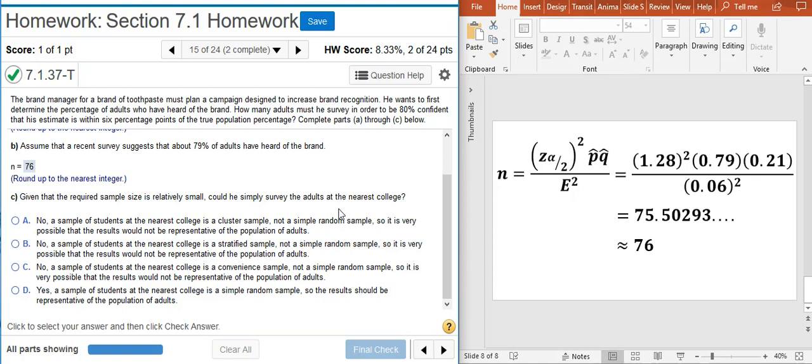So we're going to say no, you shouldn't just simply survey the adults at the nearest college because it's a convenient sample. So we look through our answer options and find the one that corresponds with that. Check my answer.